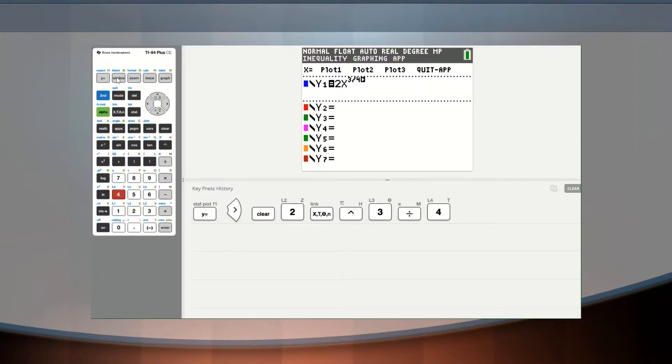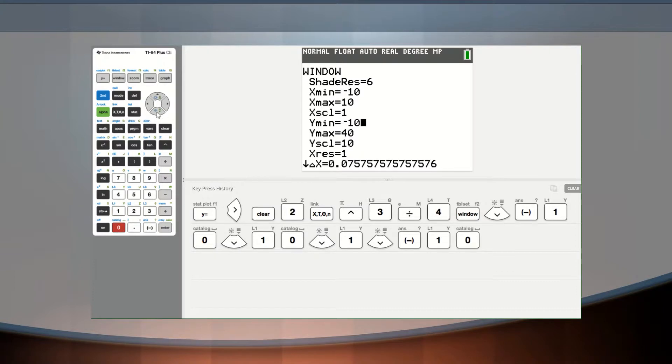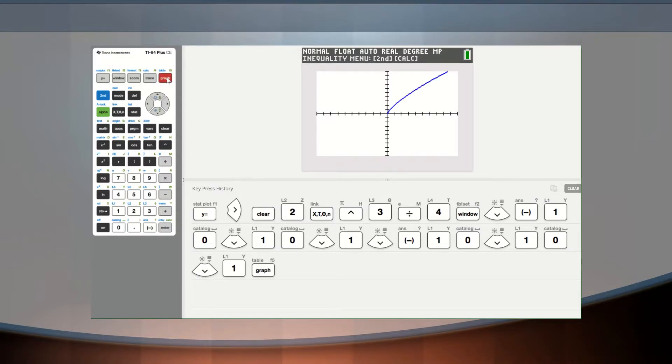I'll probably need to go in here and make some window adjustments. I think I could just take this back to default, where we got negative 10, 10, 10, and a scale of 1, and a scale of negative 10, and 10 with a scale of 1. All right, let's take a look at the graph. Okay, so it definitely looks like an even root function, almost like a square root function, except it's a fourth root.